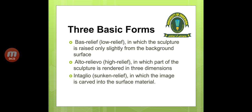Intaglio, which is called sunken relief, is where the image is carved into the surface material. So the three basic forms of sculpture are: first, bas-relief which is called low-relief; second, alto-relief which is called high-relief; and third, intaglio which is called sunken relief.